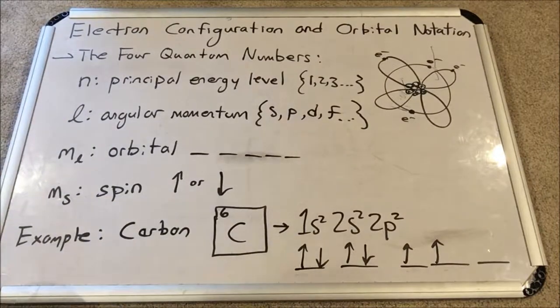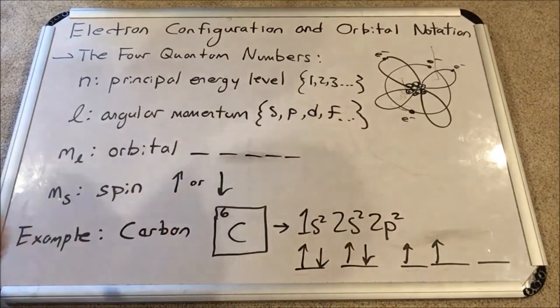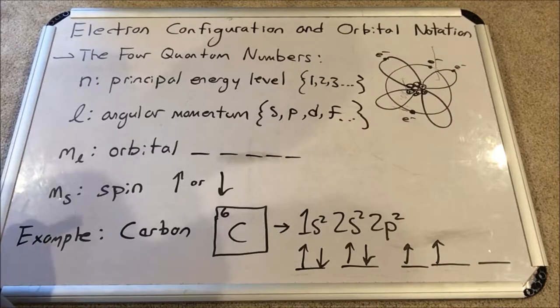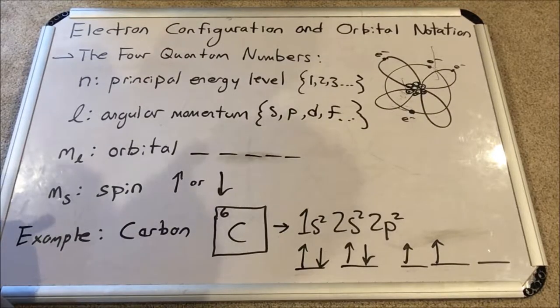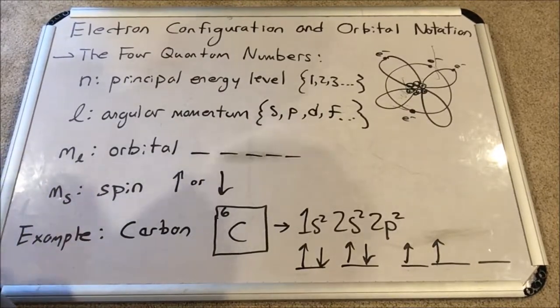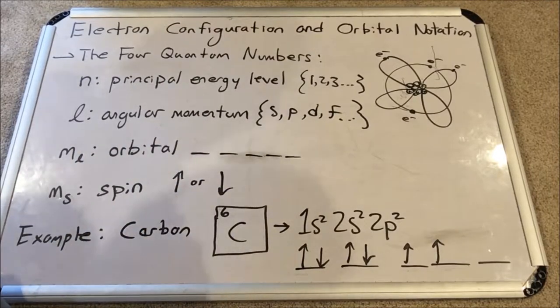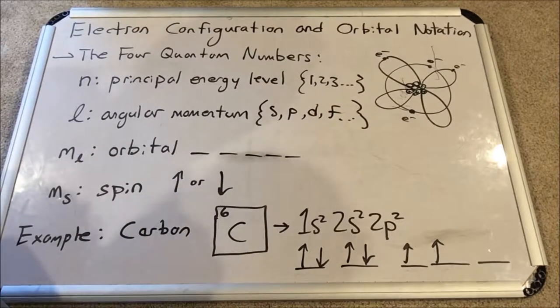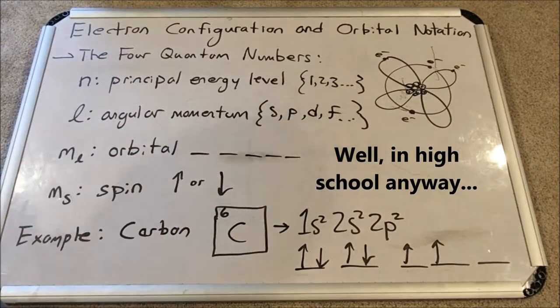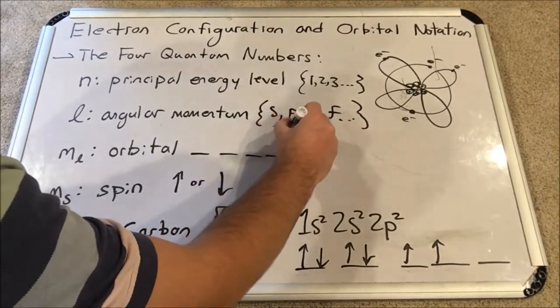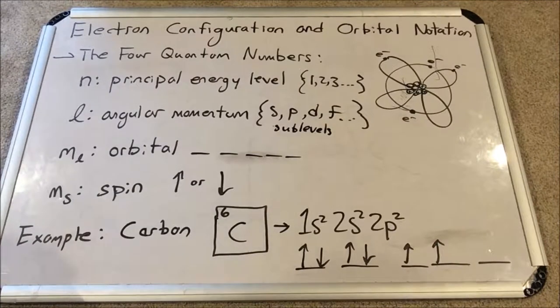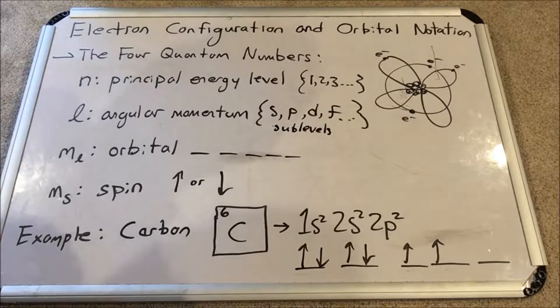N is the principal energy level quantum number and it can take on any of the natural numbers 1, 2, 3. Usually on the periodic table of elements we only go up to seven, and those are all radioactive anyway. Next, L is called the angular momentum quantum number. We don't think of it as L, we look at it as letters S, P, D, F. These are called sublevels in high school chemistry. There's also a G and an H but don't look at those because they're theoretical.